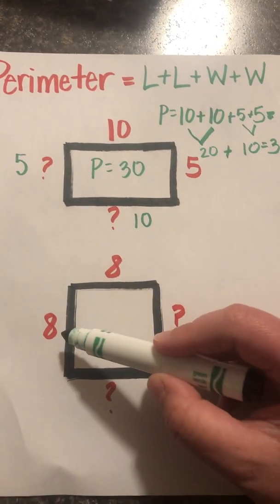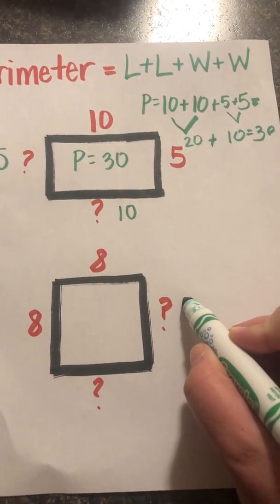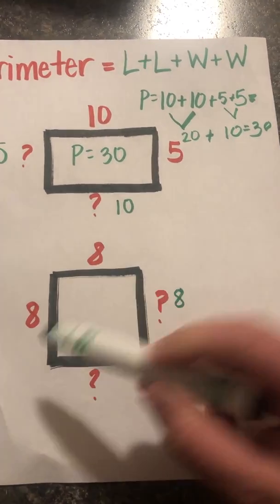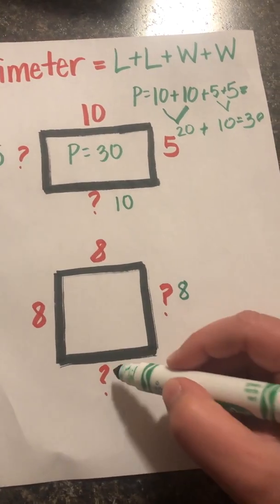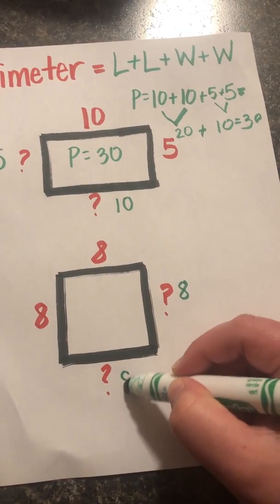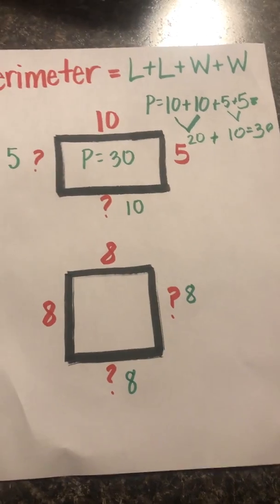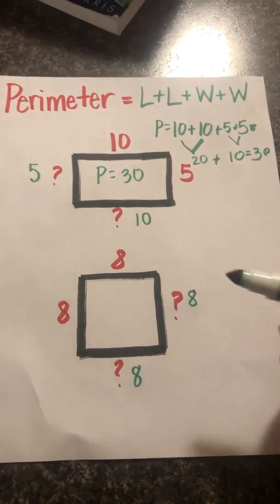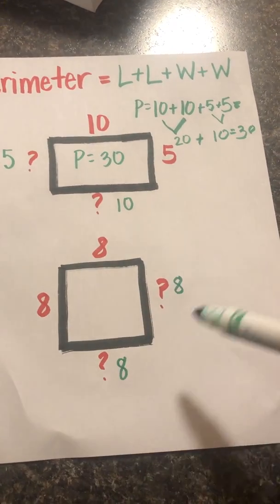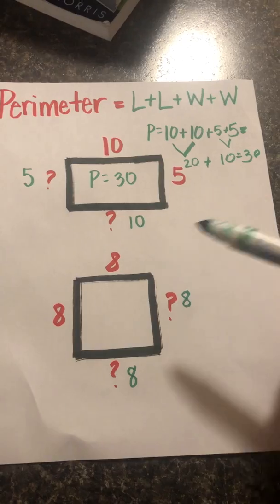So if this side is eight, then this side must be eight. And if these three sides are eight, then this one has to be eight too. Now that we have all of the sides, let's find the perimeter.